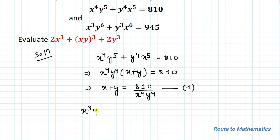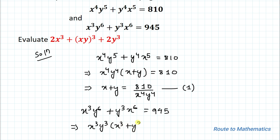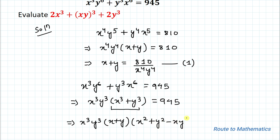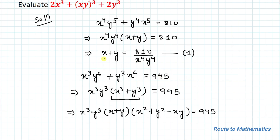Our second equation is x³y⁶ + y³x⁶ = 945. Similarly, taking x³y³ common, we have x³y³(y³ + x³) = 945. Here we can apply the algebraic identity a³ + b³, so we have x³y³ · (x + y)(x² - xy + y²) = 945.